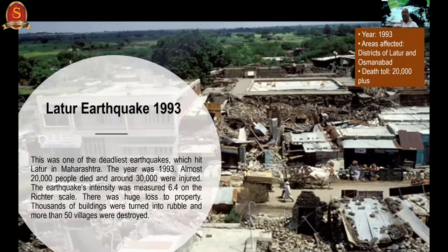The Latur earthquake killed around 20,000 people and injured 30,000 more, yet it had a magnitude of only 6.4 - not a large earthquake. This was a major eye-opener in India because even a moderate earthquake can kill so many people due to poor construction quality, and such earthquakes had never been felt in that region's recorded history.